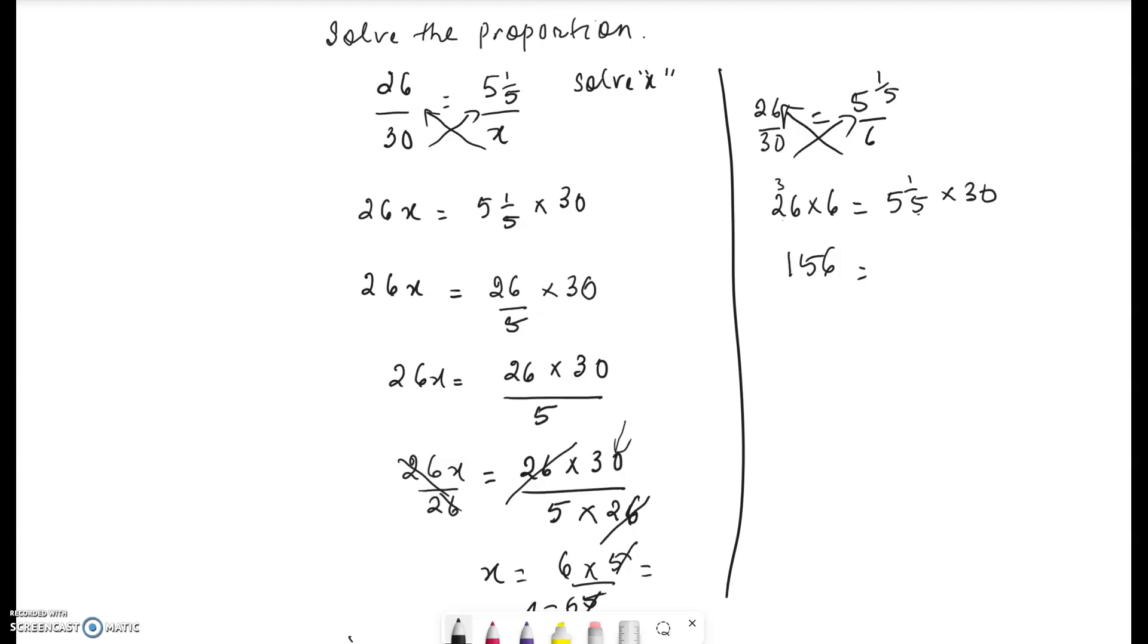5 and 1/5 is a mixed number. Change it to an improper fraction that makes it 26 over 5 times 30. Let's see what we get when we simplify the right hand side. 5 goes 6 times into 30. 26 times 6, we've already worked on this, is 156.